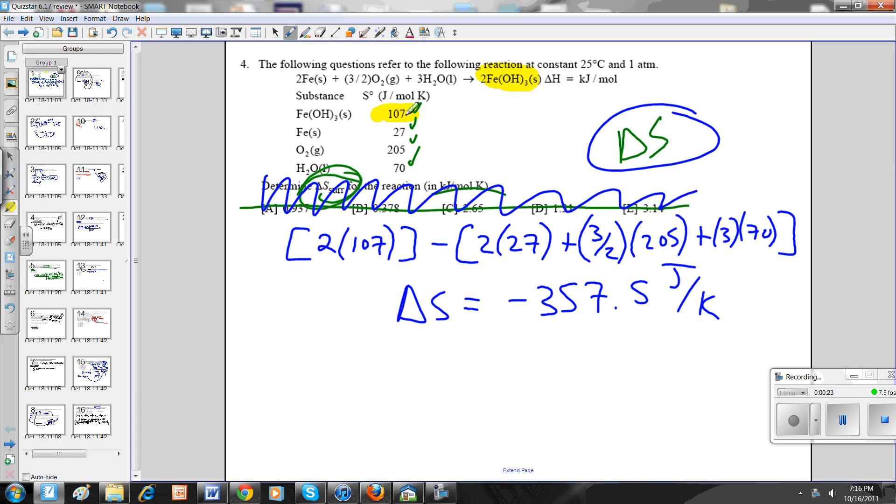The product is FeOH2. If you look at the value, FeOH3 is 107, the coefficient's 2. So I got the 107 there, the 2 there. Those are all my products. Then I take my reactants minus my reactants. So water is 70, so 3 times 70. I have that right there. 3 and 3 halves oxygen or O2 is 205. So 3 halves times 205.